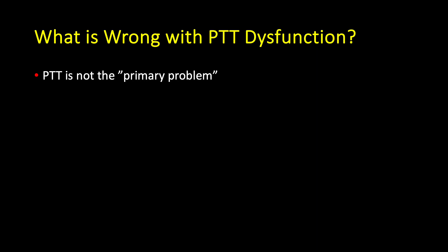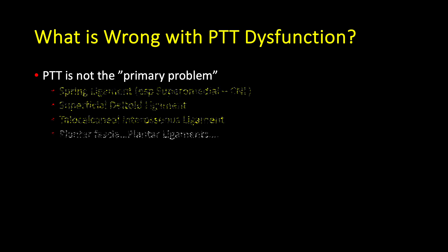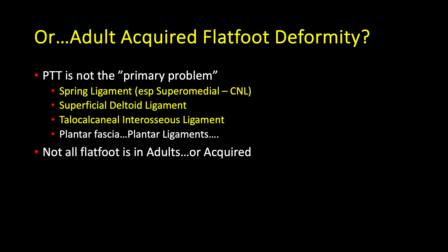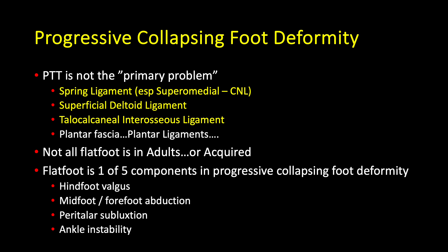The term posterior tibial tendon dysfunction has to go because the posterior tibial tendon is not the primary problem. It's really more appropriately lesions of the static stabilizers — namely the supramedial spring ligament complex primarily, the superficial deltoid ligament, the anterior components (tibionavicular and tibiospring ligaments), as well as the talocalcaneal interosseous ligament. Not all flatfoot is in adults nor is it acquired, so by consensus it's been decided to use the term progressive collapsing foot deformity, of which flatfoot is only one of five components.